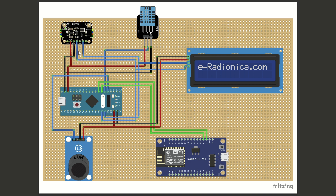This connection remains the same for the LCD module because we have used an I2C module here. The MQ135 has 4 terminals: output, D0, ground, and VCC. The output goes to A0, VCC to the 5V supply of STM32, and ground to the ground.